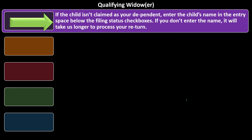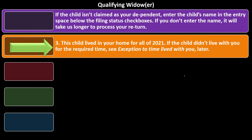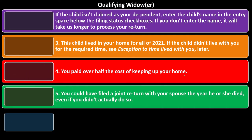Three — this child lived in your home for all of 2021. If the child didn't live with you for the required time, see the exceptions to time lived with you. The general rule is they lived with you for the full year. Four — you paid over half the cost of keeping your home. Five — you could have filed a joint return with your spouse the year he or she died, even if you didn't actually do so.